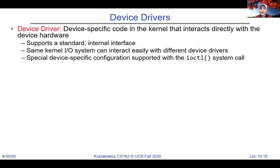The device driver level gives us the ability to interact identically with, say, a USB key versus a spinning disk drive — they present the same interface in the kernel after passing through the device driver. The device driver also provides special device-specific configuration via ioctl system calls. For example, you might set resolution on a display or baud rate on a serial link using ioctl since those don't fit into the standard read/write/open/close interface.